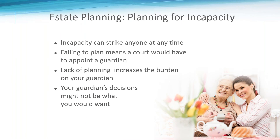Finally, let's talk about planning for incapacity. Incapacity describes a condition in which you are legally unable to make your own decisions — it can strike anyone at any time through a brain aneurysm, stroke, or similar event. Failing to plan means the court would appoint a guardian, and that guardian's decisions may not align with your wishes. You can avoid this with health care directives — documents that leave instructions about your care if you're unable to express what you want, and that manage how your financial affairs are handled if you become incapacitated.